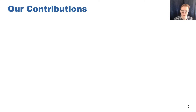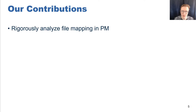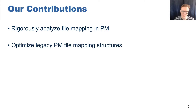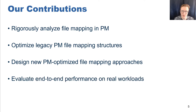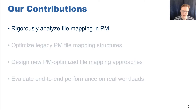This leads to the main contributions of our work. We perform a rigorous analysis of file mapping in persistent memory file systems to determine what design decisions lead to performance bottlenecks. We then optimize commonly used persistent memory file mapping structures and compare their performance to the current state of the art. These exercises helped us identify further opportunities to leverage the unique properties of persistent memory, which led us to designing novel persistent memory file mapping structures. Finally, we optimize all of our structures and evaluate them on real application workloads.